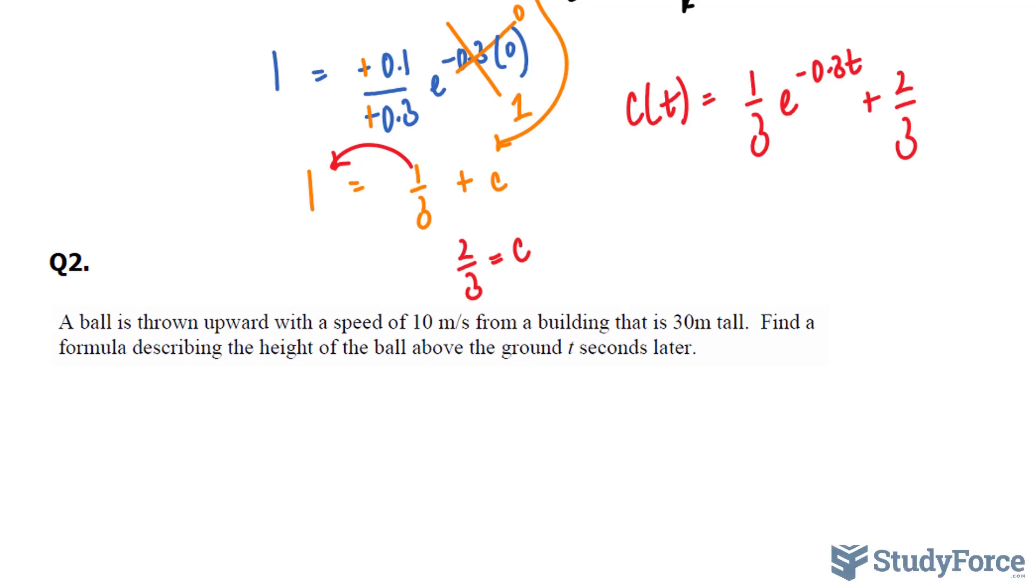Let's move on to question 2. This time we're asked a ball is thrown upward with a speed of 10 meters per second from a building that is 30 meters tall. Find a formula describing the height of the ball above the ground t seconds later. I want to start by illustrating what's happening here. Pretend that there is a building, that's the edge of the building, and you throw a ball 10 meters per second up into the air. And eventually that ball will go downwards. So we will let up be positive, the upwards movement of that ball, and the downwards movement of that ball will be negative.